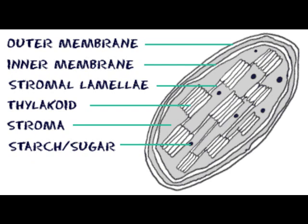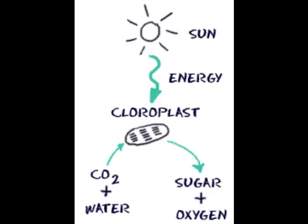This is a chloroplast. Within the chloroplast, the chlorophyll uses sunlight to produce sugar. This process is called photosynthesis.